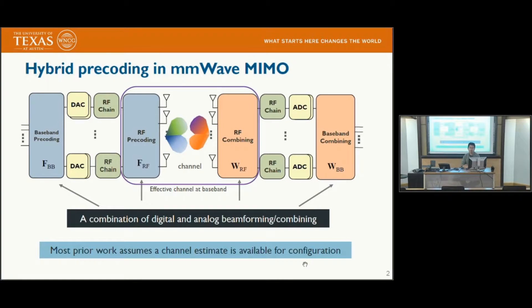This is the general system model we consider: a hybrid precoded MIMO structure with both baseband and analog precoding and combining parts. In our proposed channel estimation method, we only consider the analog part — using analog beams to estimate the channel's angle of departure (AOD) and angle of arrival (AOA). This channel state information is important to further optimize the baseband and analog precoding matrices.